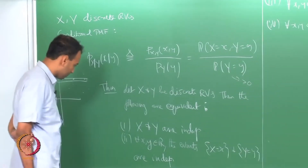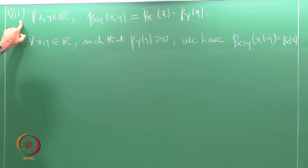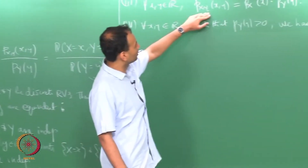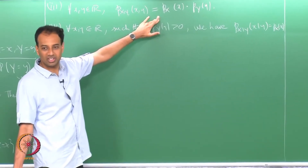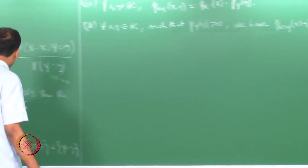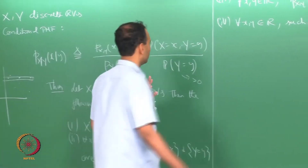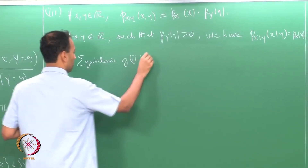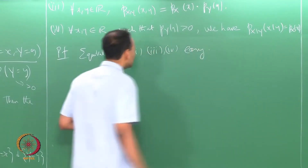In this case, some of these are trivial. The equivalence of statements 2 and 3 is quite trivial — we are saying the event X equals little x and Y equals little y are independent events, and the equivalence to the PMF factorizing follows almost straight from the definition. In fact, the equivalence of 2, 3, and 4 is very easy; I will not do it — it is almost from the definition.